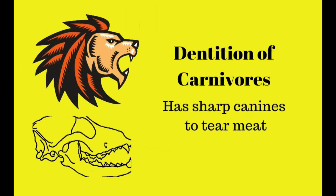Dentition of carnivores: carnivores mostly have sharp canines only. It is to tear meat.